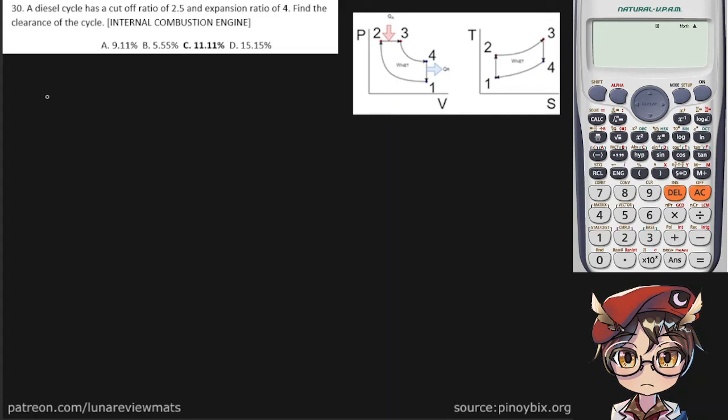A diesel cycle has a cutoff ratio of 2.5 and an expansion ratio of 4. Find the clearance of the cycle. So this one's a simple problem if you have your diesel cycle formulas memorized.